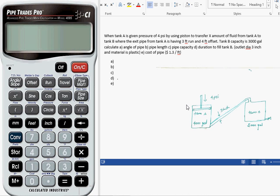the fluid from tank A is transferred to tank B by means of a piston pressure of 4 psi, where the 3-inch pipe is in elevated condition. We need to calculate the angle of pipe fit. Let me begin the calculation. Before that, let me clear the memory from the previous session.